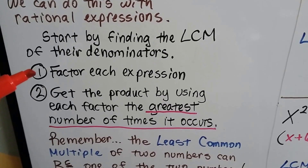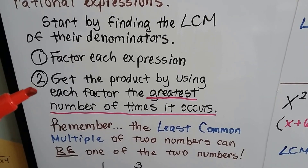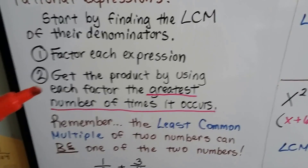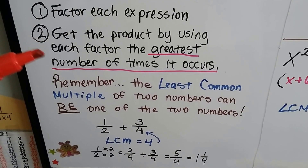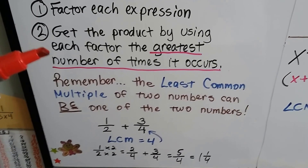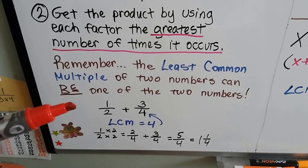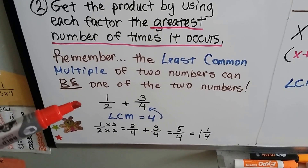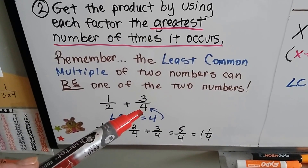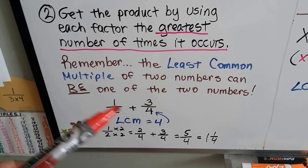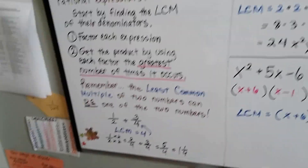We factor each expression, and once they're factored, we get the product by using each factor the greatest number of times it occurs — we use the one that shows up the most times. Remember, a least common multiple of two numbers can actually be one of the two numbers. For example, with 1/2 plus 3/4, the least common multiple can be that 4, so it can be one of the rational expression's denominators.